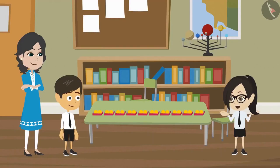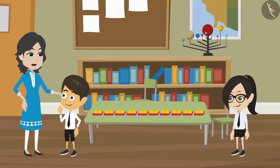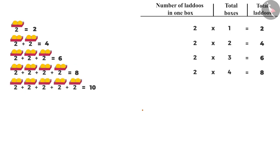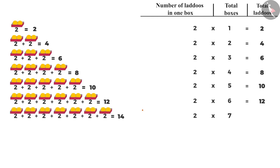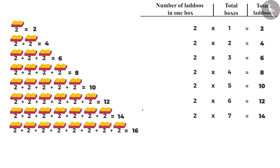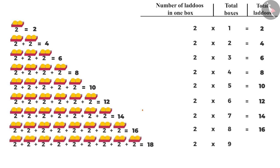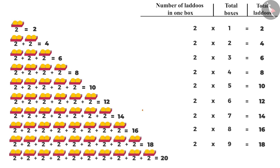That means we don't need to add them. For five to ten, you should try to find the result yourself. Then to find the ladoos in five boxes, we will multiply two by five — there will be ten ladoos. Number of ladoos in six boxes will be two multiplied by six, that is twelve. In seven boxes, two multiplied by seven, that is fourteen. In eight boxes, two multiplied by eight, that is sixteen. In nine boxes, two multiplied by nine, that is eighteen. And in ten boxes, two multiplied by ten, which comes to twenty.